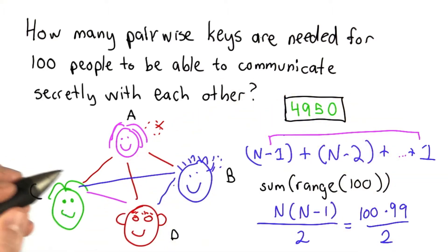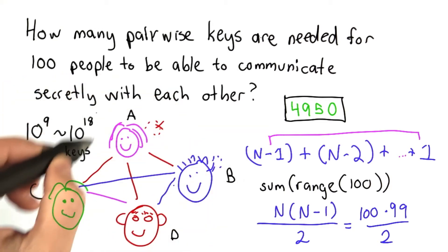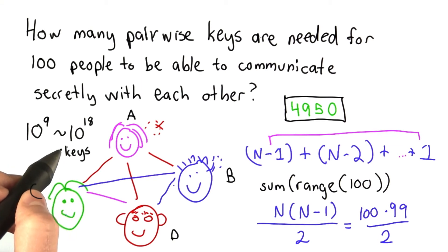So this means the number of keys that we need scales as the square of the number of people. So if we think about doing this for a group of people as large as the Internet, where we have 10 to the 9 or a billion people, we would need 10 to the 18 keys to have pairwise keys between each pair. This is a ridiculously large number of keys.